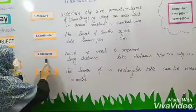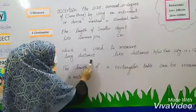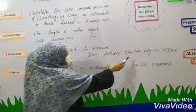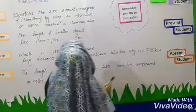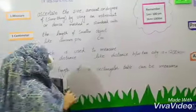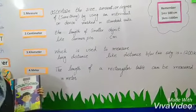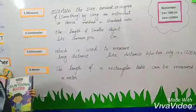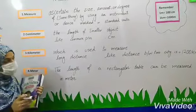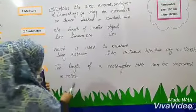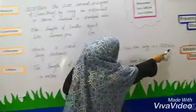Next is kilometer, which is used to measure long distances. For example, the distance between two cities is 1200 kilometers. The short form is km.